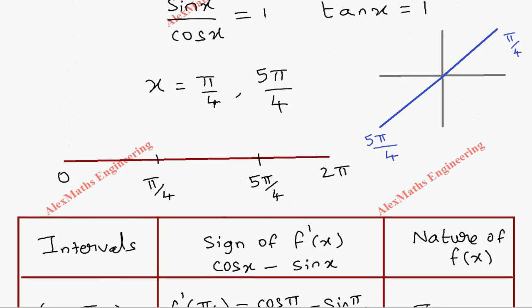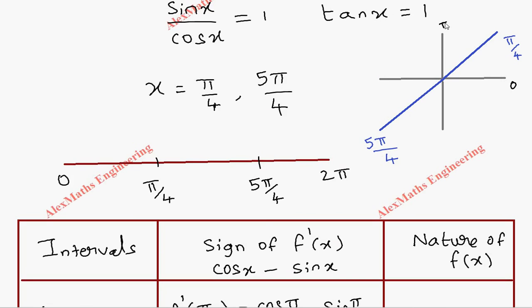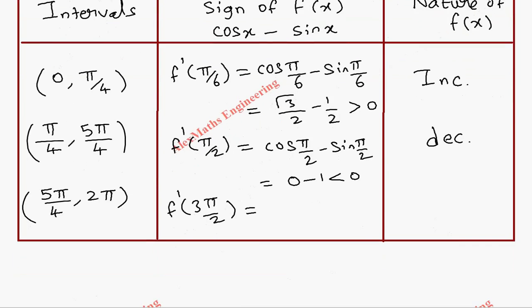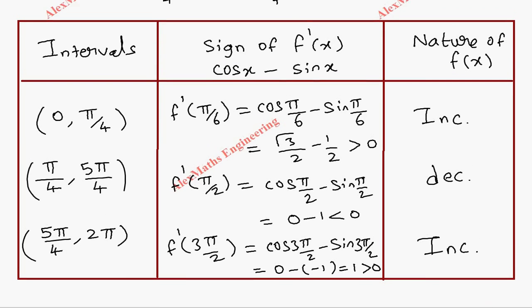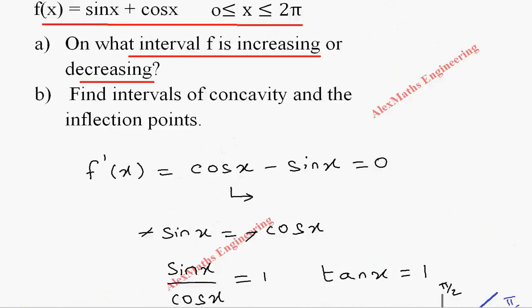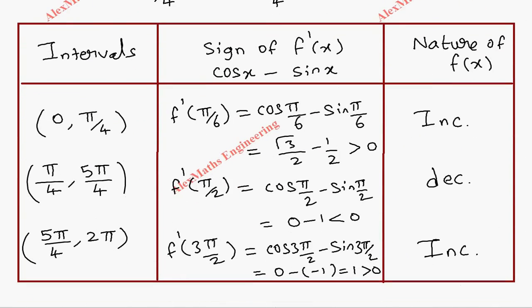For the third interval between 5π/4 and 2π, we take x = 3π/2. cos(3π/2) − sin(3π/2) = 0 − (−1) = 1, which is greater than 0. So the function is increasing. This completes Part 1 — we found where the function is increasing and where it is decreasing.